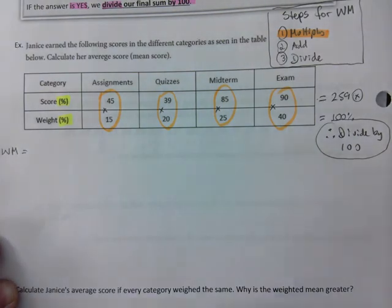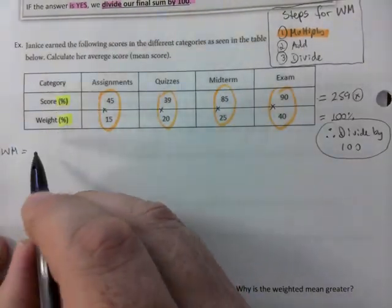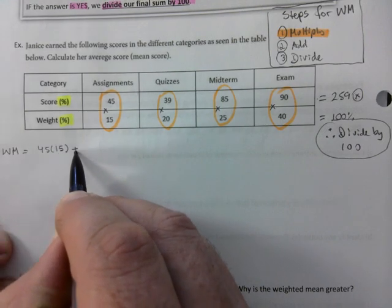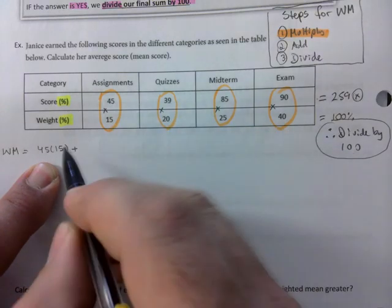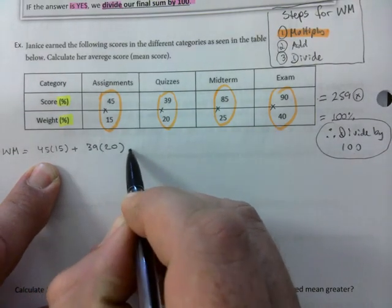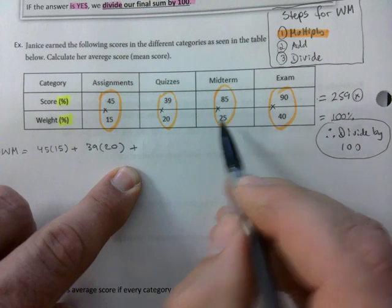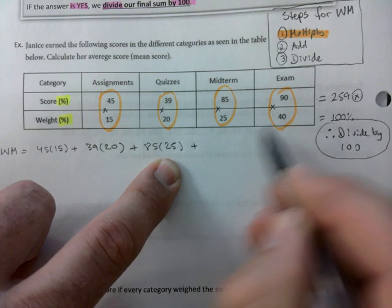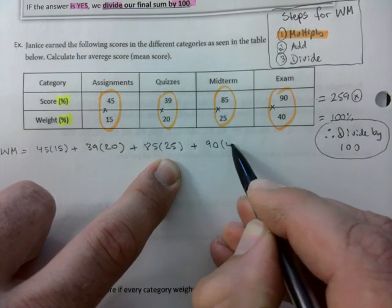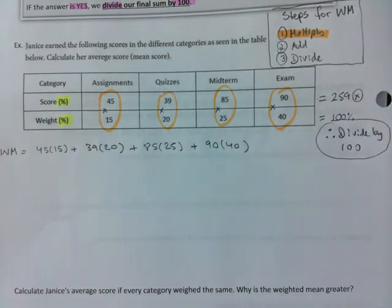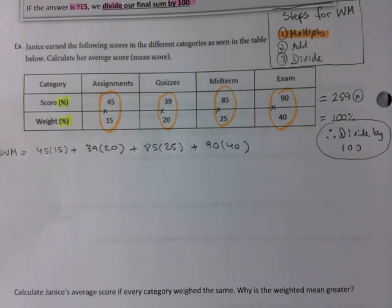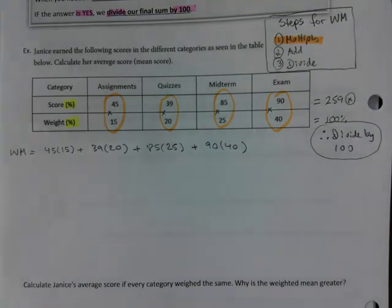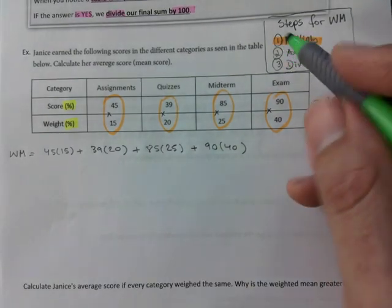So we are in weighted mean category because we have got two different categories. So we go 45 times 15 plus, that's this one here, plus 39 times 20 plus 85 times 25 plus 90 times 40. Now you've multiplied. That's step number one. Step number two, I just did that. That would be add.